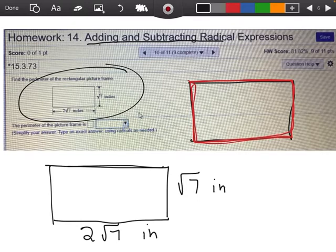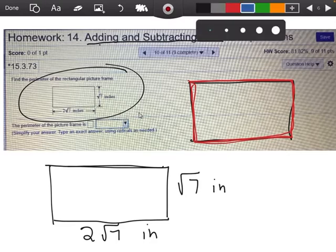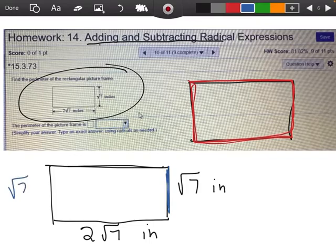Remember, one thing we know about a rectangle is the opposite sides are going to be the same length. So what does that mean? That means if this side here is the square root of 7 inches, then that one's also going to be the square root of 7 inches. And if this bottom one down here is 2 square roots of 7 inches, then the top part is also going to be 2 square roots of 7 inches.